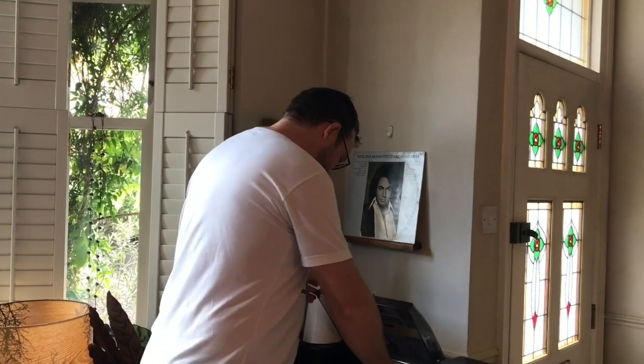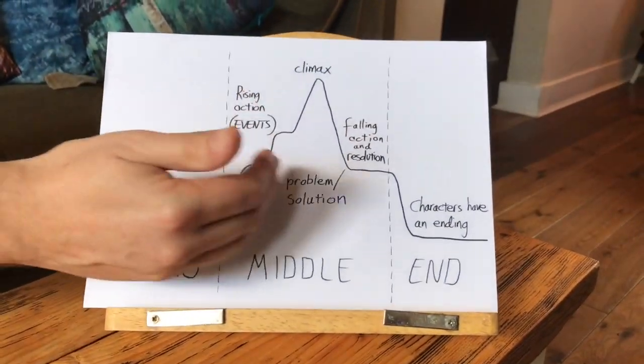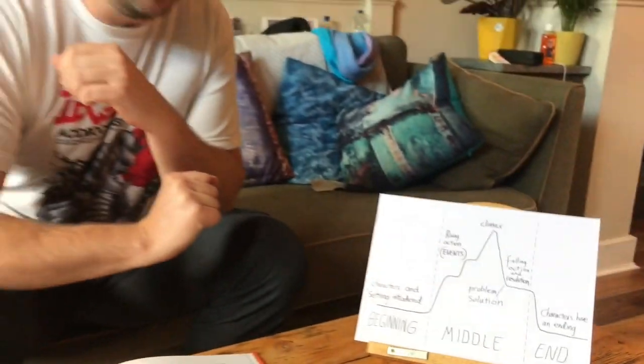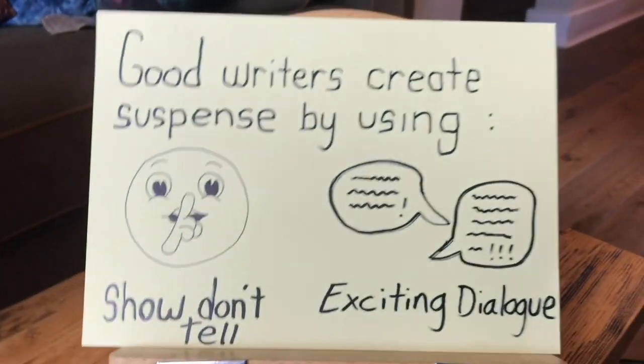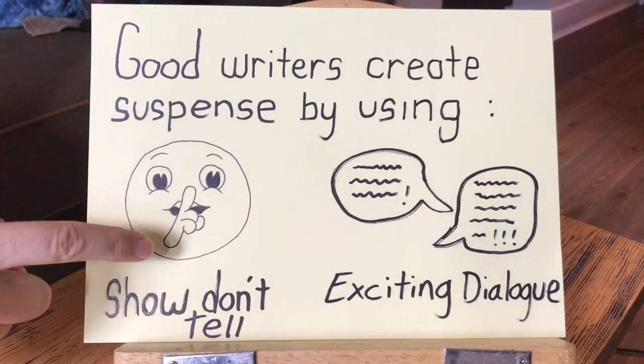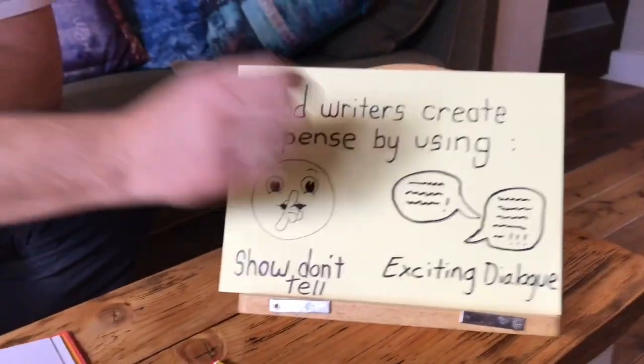Welcome back to another writing workshop. Today's lesson is about the middle of your story — the rising action and the climax — so the tension that rises due to the events in the story. Good writers create suspense by using show don't tell and exciting dialogue.